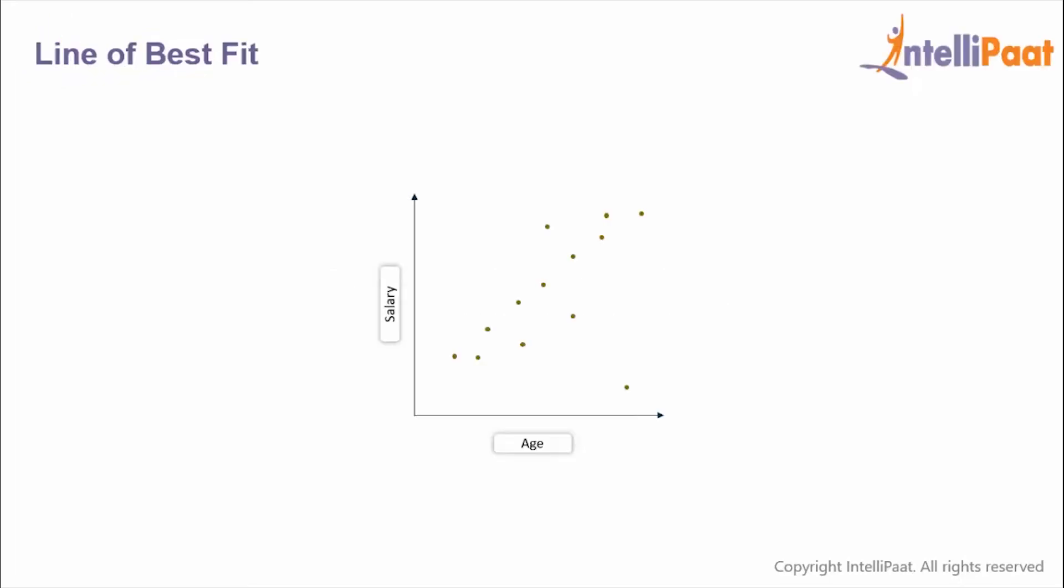This time we are trying to fit a linear line between the age of an employee and his salary. So the line could be this, this, or this. How do we know which of these is the best fit line? There could be infinite possibilities. So this is where we need to have a look at the residual values.